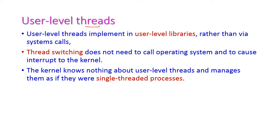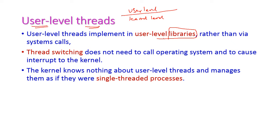There are two types of threads: the first is user level and the second is kernel level. User level threads are implemented in user level libraries. At the user level, the thread does not require system calls for execution — only user level libraries are used. If it is a kernel level thread, then system calls are required; otherwise, a function call is sufficient for user level threads.